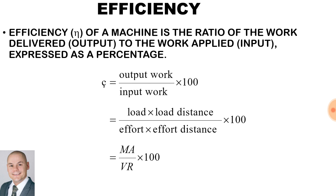To calculate the efficiency of the machine, it is the output work divided by the input multiplied by 100. The output is the load multiplied by the load distance, and the input is the effort multiplied by the effort distance. Simply put, the mechanical advantage divided by the velocity ratio gives us the efficiency.